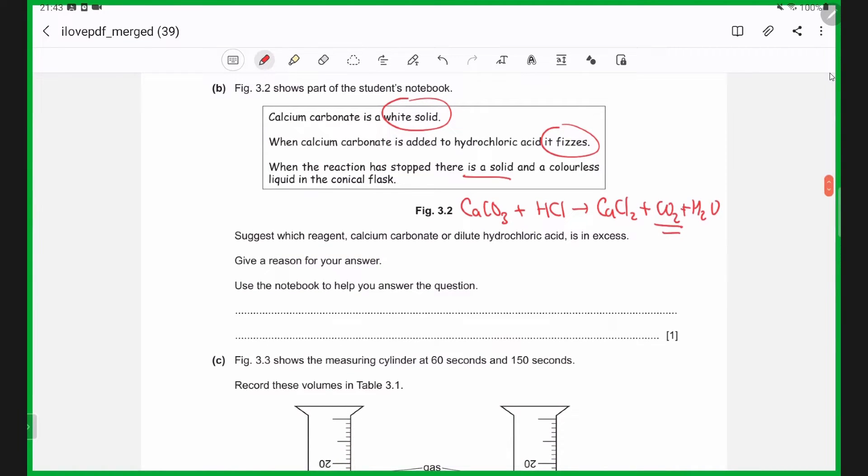So we know from this notebook that there is solid leftover, meaning that in this reaction here, we have the calcium chloride solution, as well as some leftover calcium carbonate, meaning that the calcium carbonate must be in excess. We know that solid calcium carbonate is in excess as it remains in the flask.